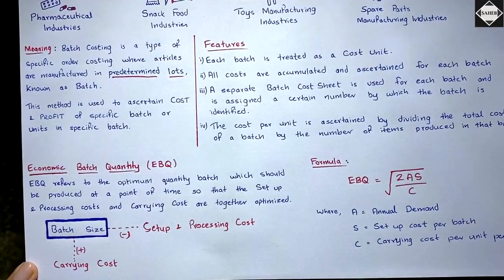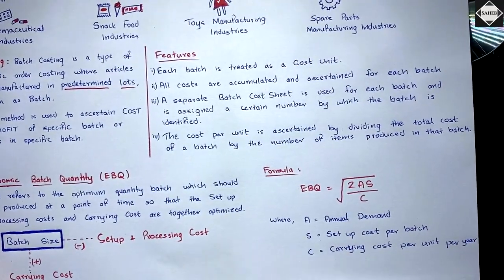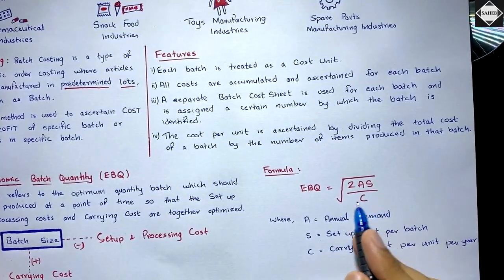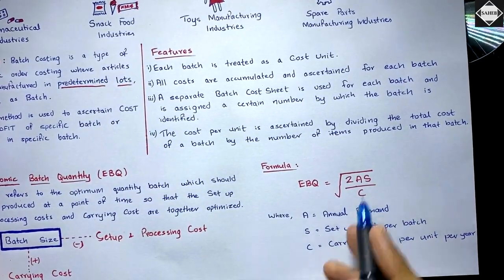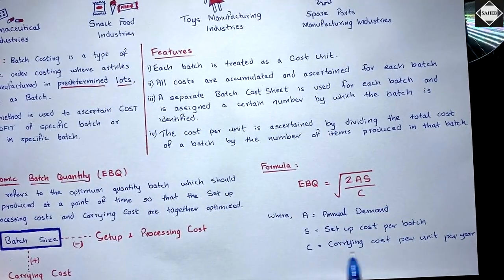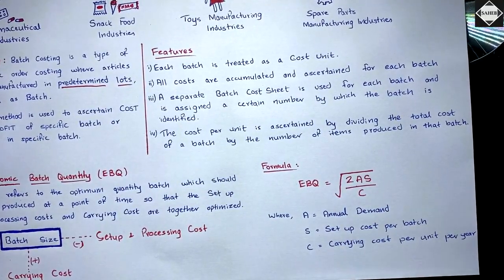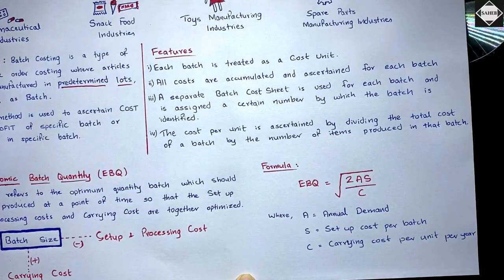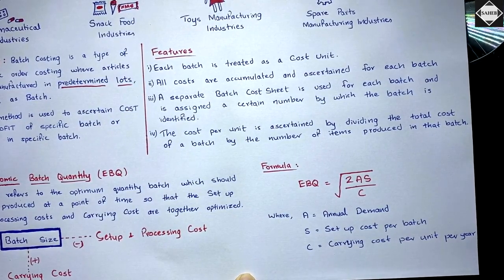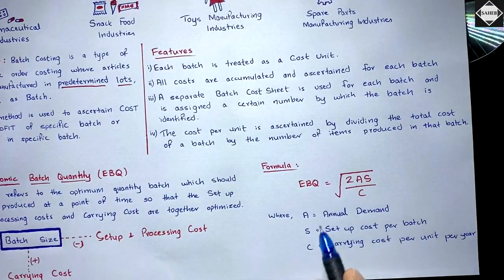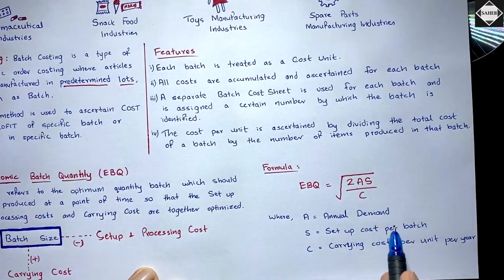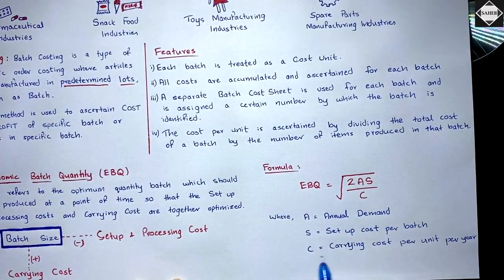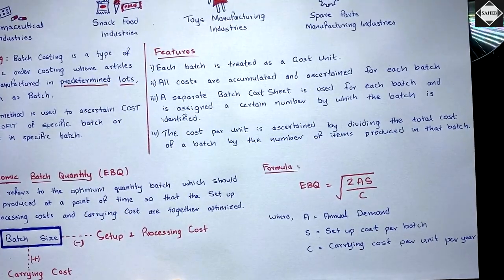The EBQ formula is the same as the EOQ formula: EBQ = √(2AS / C), where A is the annual demand, S is the setup cost per batch, and C is the carrying cost per unit per year. Note: if carrying cost is given per unit per month, convert it to per year before applying the formula.